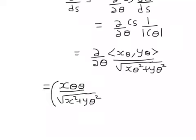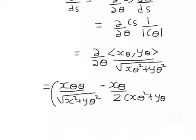For the derivative of the square root I divide by 2, giving (x_θ² + y_θ²) raised to 3/2 in the denominator, and then I differentiate within the square root.